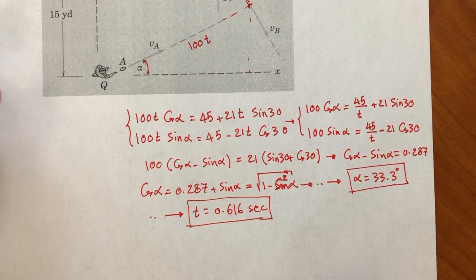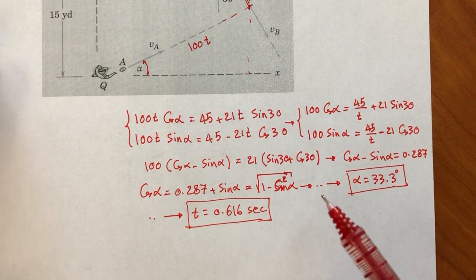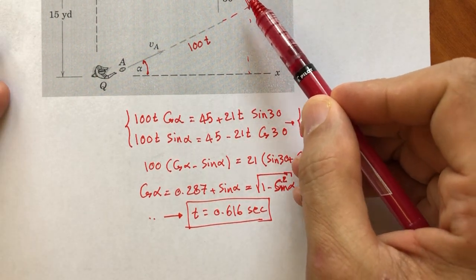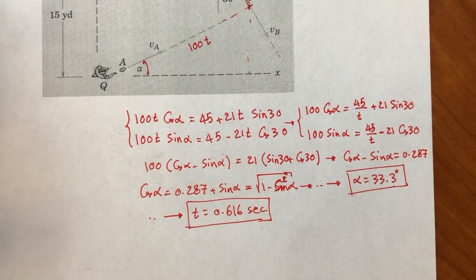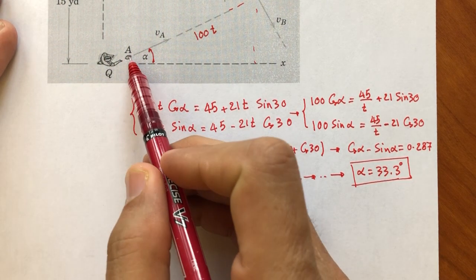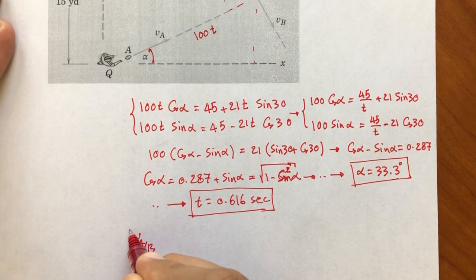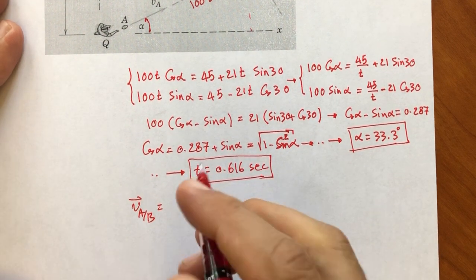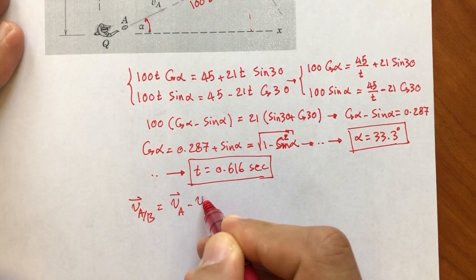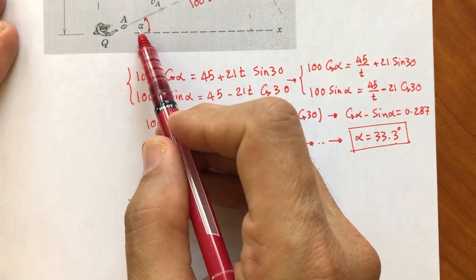After finding alpha and t, we have everything we need. The second part of the question asks for the relative velocity of the ball (A) with respect to receiver B. The velocity of A with respect to B equals velocity of A minus velocity of B. The magnitude of A's velocity is 100 ft/s at angle alpha.